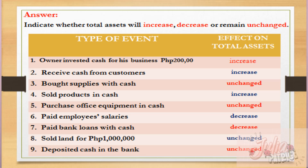Number four: sold products in cash. The product was sold, meaning cash came into the business. Because cash increased in the business, the answer is increase in total assets. Number five: purchase office equipment in cash. This is just like number three — cash is simply converted into another asset, office equipment. So it has no effect on total assets; the answer is unchanged.